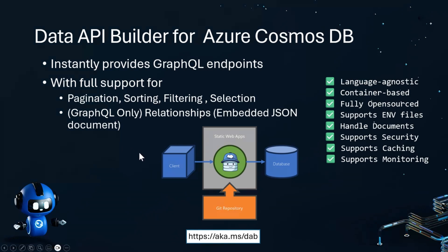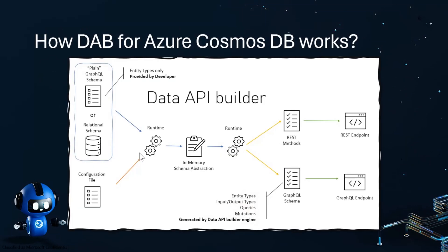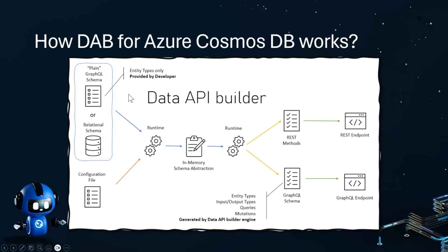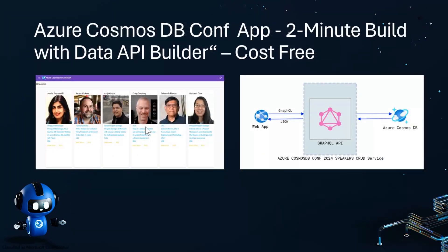I will be demoing both options: one using my local environment, and the other using the Azure Static Web Apps integration, using an end-to-end app. Data API Builder for Azure Cosmos DB requires two inputs from the developer: one is the configuration file, and the other is the schema file. As you might know, Azure Cosmos DB is a schema-agnostic database, so the developer needs to provide the schema — which is a common concept in GraphQL — for the collection whose GraphQL endpoint needs to be exposed. Once the user provides these two files, the runtime uses them as a source of truth and will generate a GraphQL endpoint automatically with a single command.